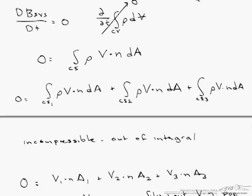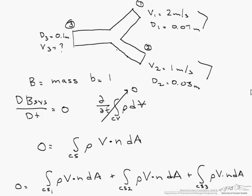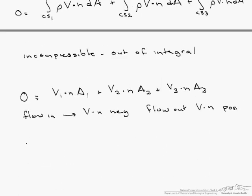So let's go back to our picture again. And if you notice that flow in is our v3, so v3 dot n is positive. And our flow out is both v1 and v2. Let's write this as 0 equals, v1 is going out plus v1 A1, v2 is leaving the control volume, so that is plus v2 A2. And finally v3 is entering the control volume, so that is minus v3 A3.